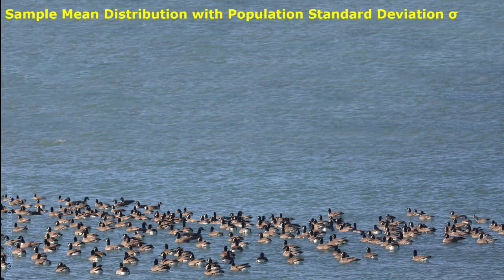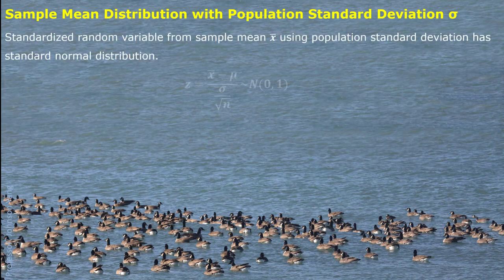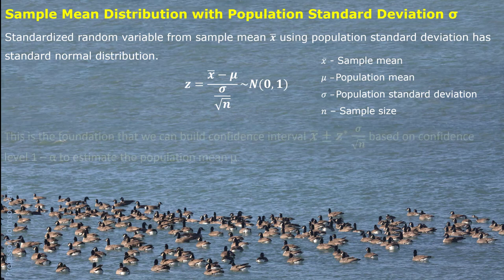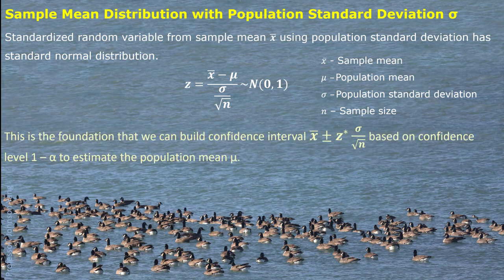When the population standard deviation sigma is known, the standardized sample mean will follow standard normal distribution. With this sampling distribution, we can build up a confidence interval with x-bar as the center, and the margin of error comes from the z critical value multiplied by the standard deviation of the sample mean.